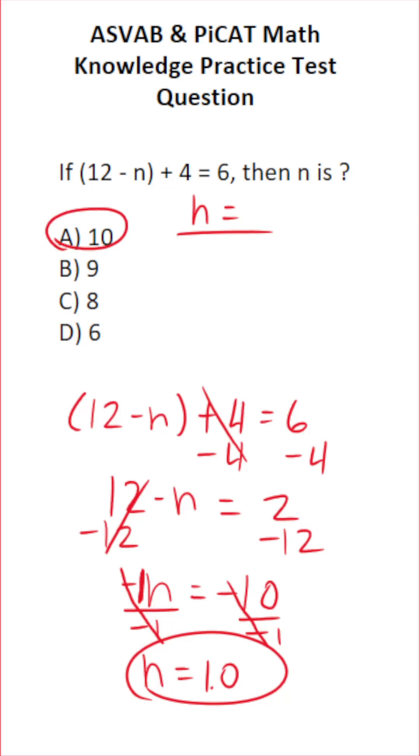That said, you always want to check your work. We now know that n equals 10. So we're going to take 10 and plug it into the original equation and see if it makes a true statement. So this becomes 12 minus 10 plus 4 equals 6.